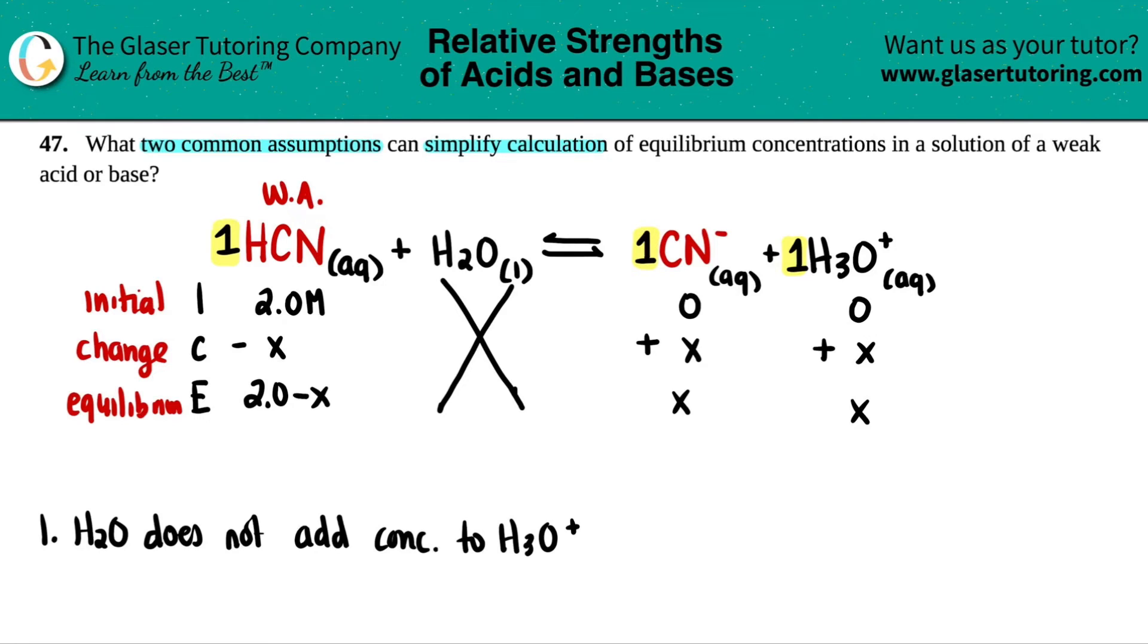Now here's the other assumption. Ka values for weak acids are very, very, very low. They're less than one. We're talking like 10 to the negative 10, 10 to the negative six, those types of numbers. When you have a very low Ka value, that means that at equilibrium, you have mainly reactants.